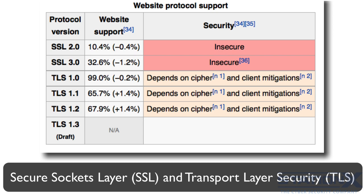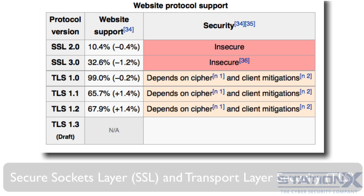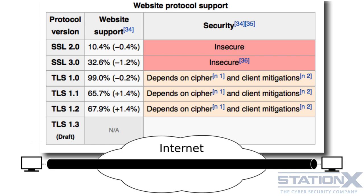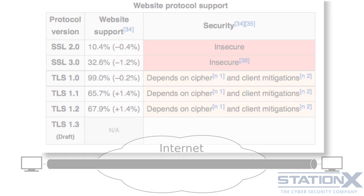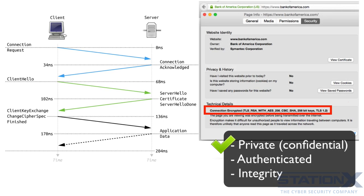TLS provides privacy because it encrypts the data, and data integrity because it uses message authentication codes or MACs when communicating between two applications. For example, when your web browser communicates with your online bank, the communication is encrypted end to end using TLS. The connection is private because a symmetric algorithm such as AES is used to encrypt the data transmitted. The keys for this symmetric encryption are generated uniquely for each connection, based on a secret negotiated at the start of the session.